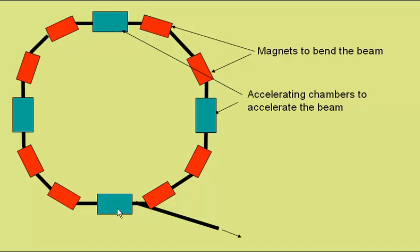So if we observe a particle starting from this accelerating chamber, it would pass relatively slowly around this point. The magnet is bending the beam. It gets accelerated to a higher speed, bent again, accelerated further.